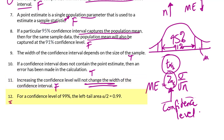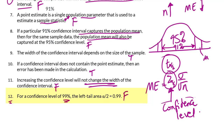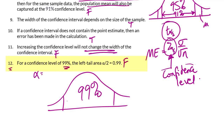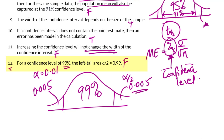Number 12: For a confidence level of 99%, the left tail area α/2 is 0.99. That is a false statement because the 99% is in the middle. We have 99% in the center, leaving 1% remaining, so alpha is 0.01. Dividing by 2, we get 0.005 in each tail. So α/2 will be 0.005.